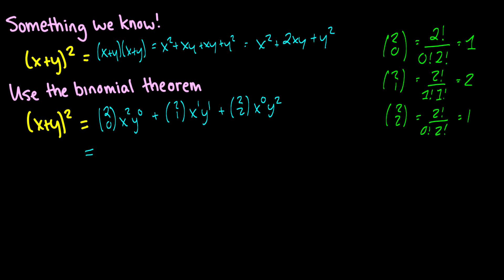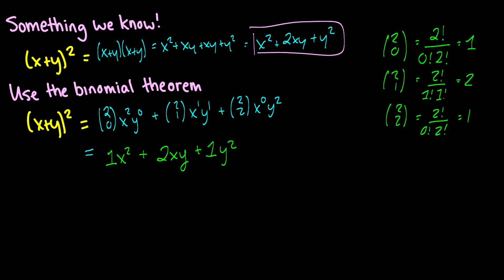Let's plug those values in. We're going to have 1 times x squared (y^0 is just 1 so we leave it out), then add 2 times xy, plus 1 times y squared. This happens to be the same thing we got before. So the formula works for a small power, and you can check this for a higher power if you have any concerns about whether this is true.